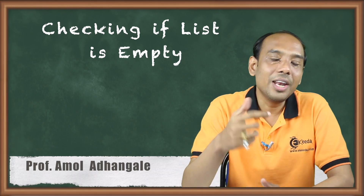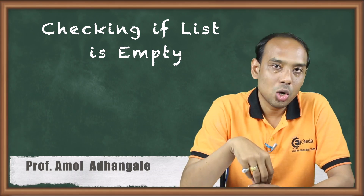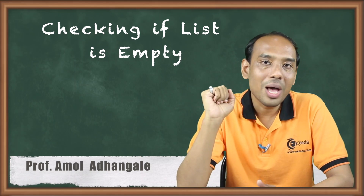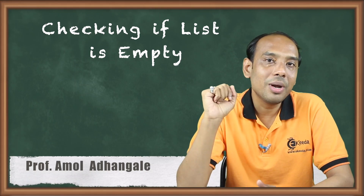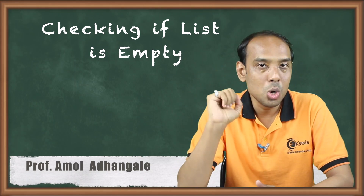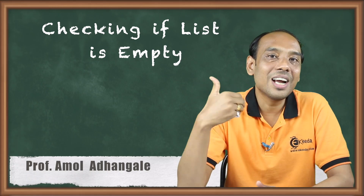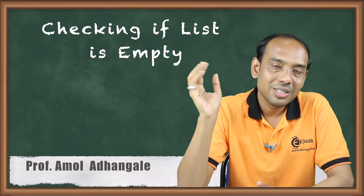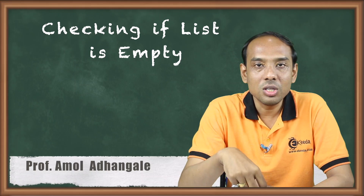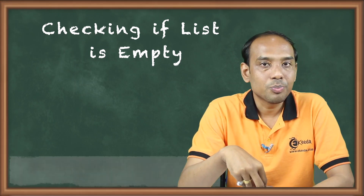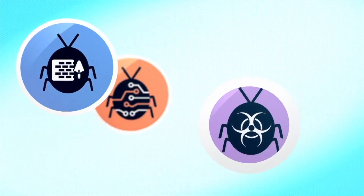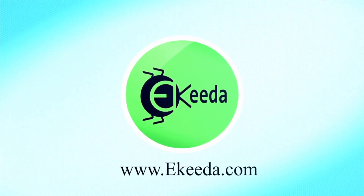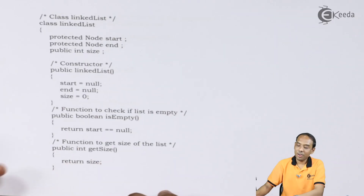Before that, I need to check whether the list is empty or not. If it is empty, then only I can insert values. Now suppose if I want to delete elements from an empty linked list — is it going to be possible? No. So to perform this kind of operation, I need to first check whether the list is empty or not. That's why this function holds prime importance in the case of a linked list.